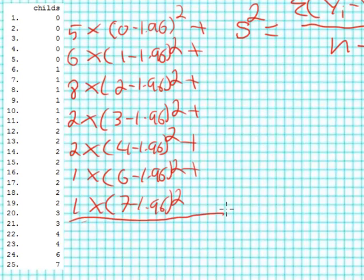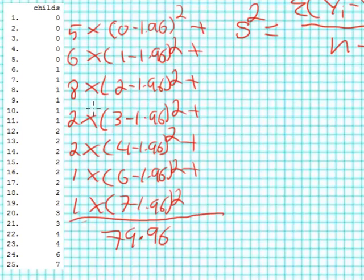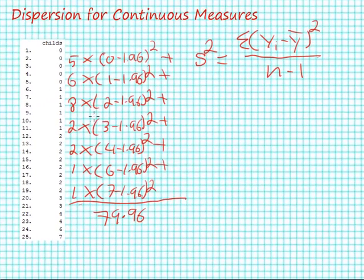And if I do that operation, I end up getting the value of approximately 79.96. So this value, 79.96, is the sum of the squared deviations of each value of y around the mean of y. So my numerator for my variance is going to equal 79.96.